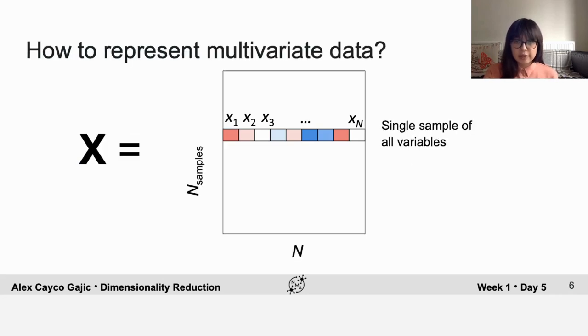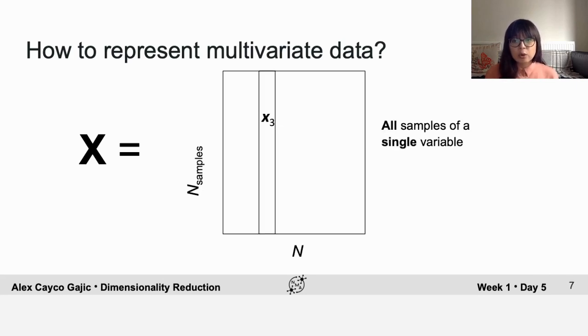And how do you represent all of this data? One way is to just stack all of the vectors together into the data matrix X. In this matrix, each row corresponds to a single sample of all of the variables, so all of the firing rates of all neurons at a single time point. And each column corresponds to all of the samples of a single variable. So X3 would be the firing rates for neuron 3 at all time points in your experiment.